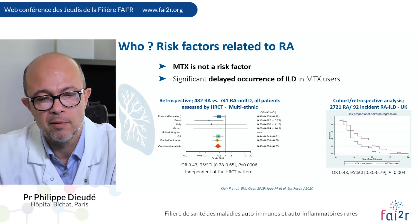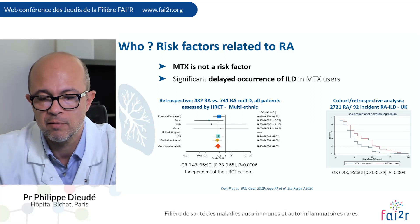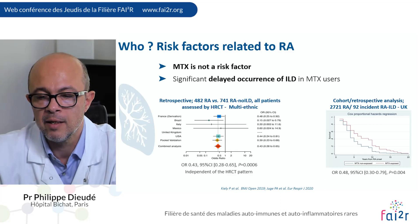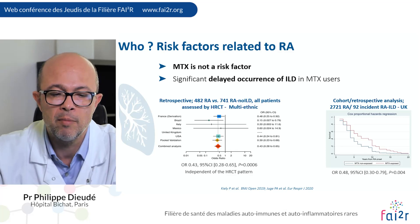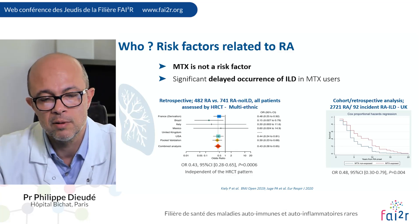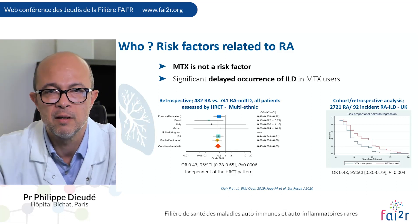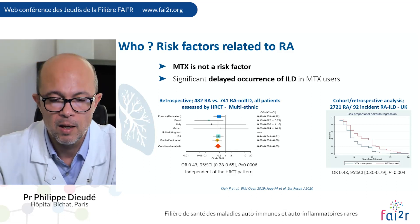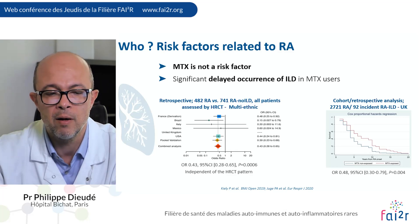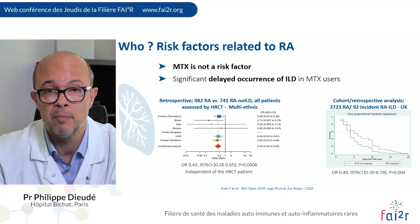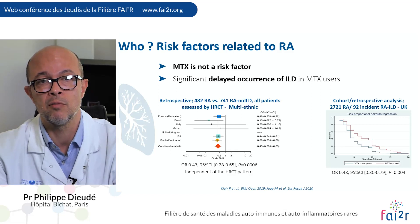Methotrexate has been considered for a long time as the usual suspect regarding RA-ILD, and today we can say that methotrexate is not a risk factor. This is coming from two studies. The first is from the UK — a retrospective analysis of an RA cohort — and the authors found that methotrexate acts with a protective effect regarding incident ILD. The second study is from my group, an international case-controlled study, where we also found a protective effect regarding the risk of ILD. The design of both studies being retrospective, we cannot say this is a protective factor, but at least it is not a risk factor. Both studies also found a significant delayed occurrence of ILD in methotrexate users, suggesting that methotrexate could act with a protective effect.